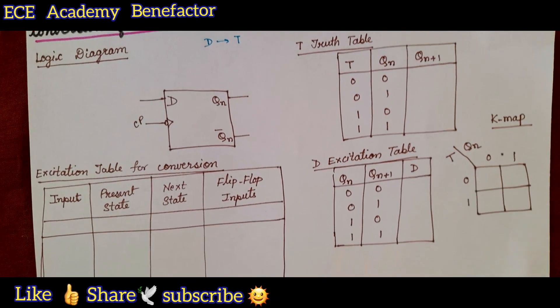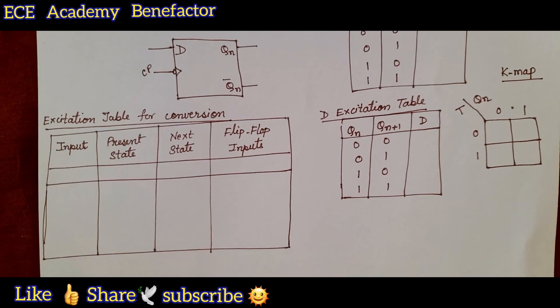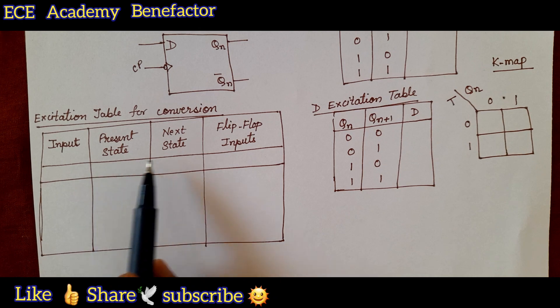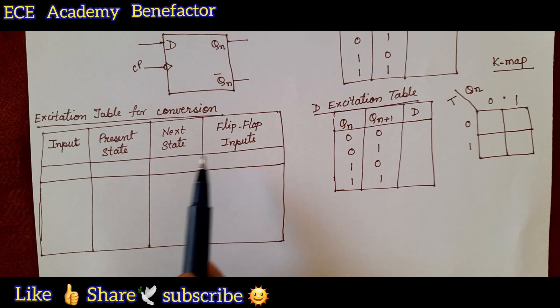What the excitation table will have? It is having 4 columns. First is input, present state, next state and flip-flop inputs.